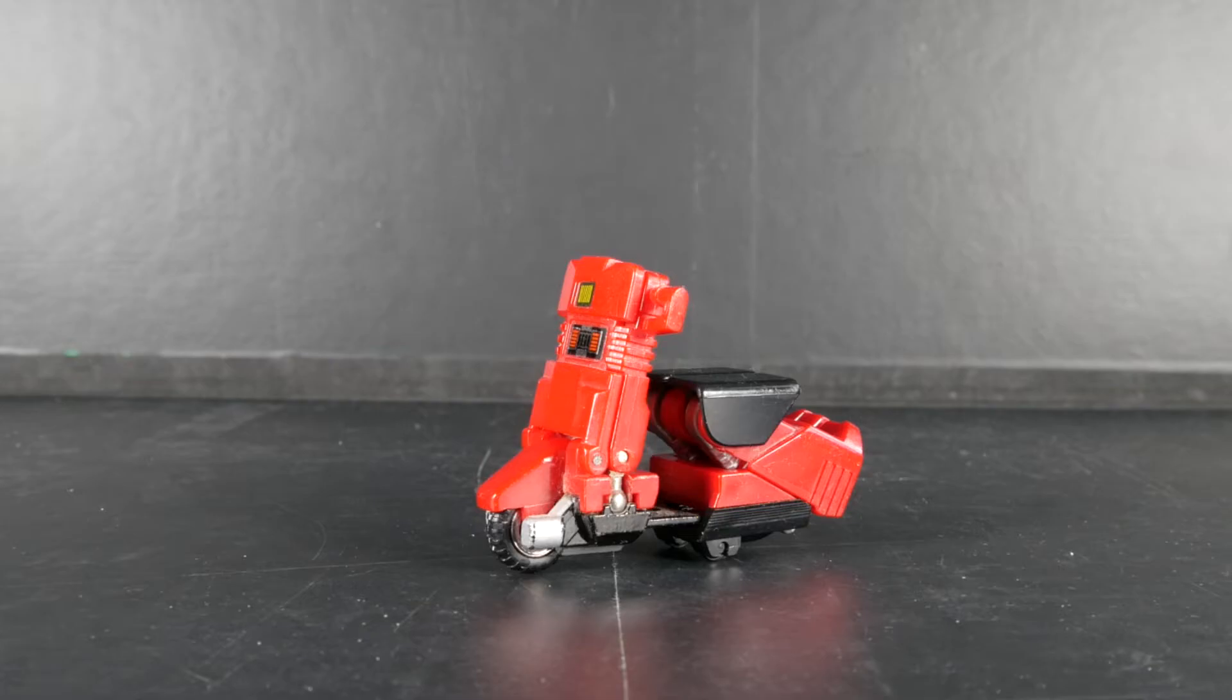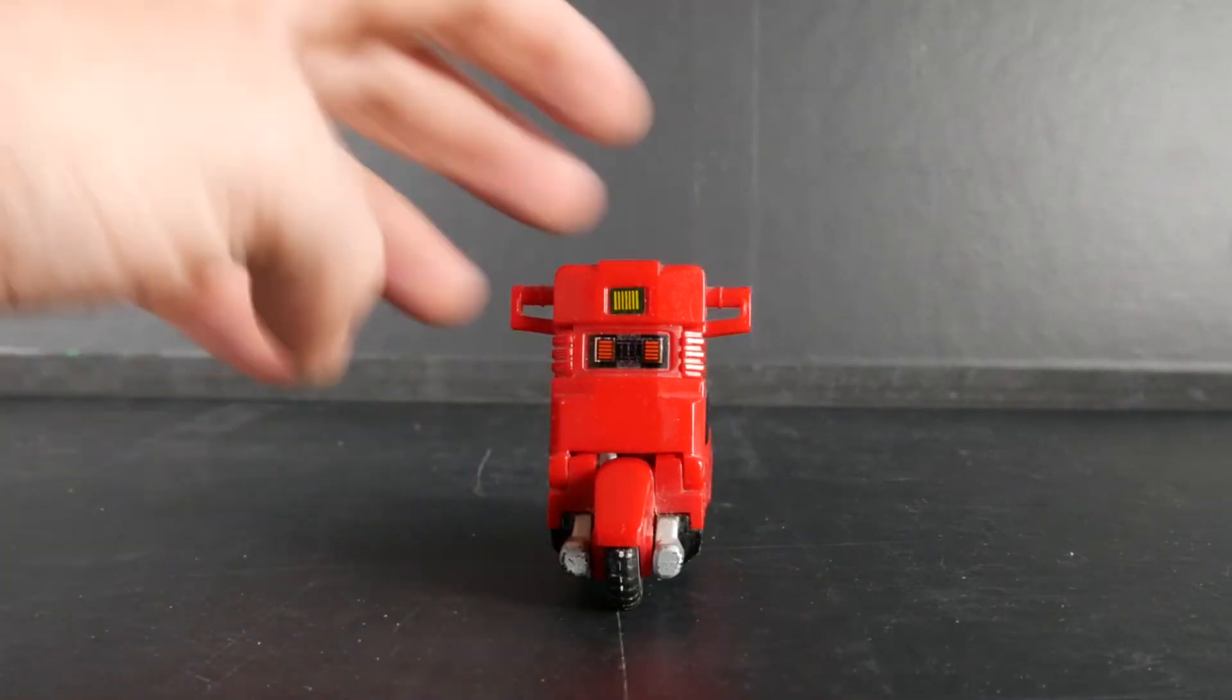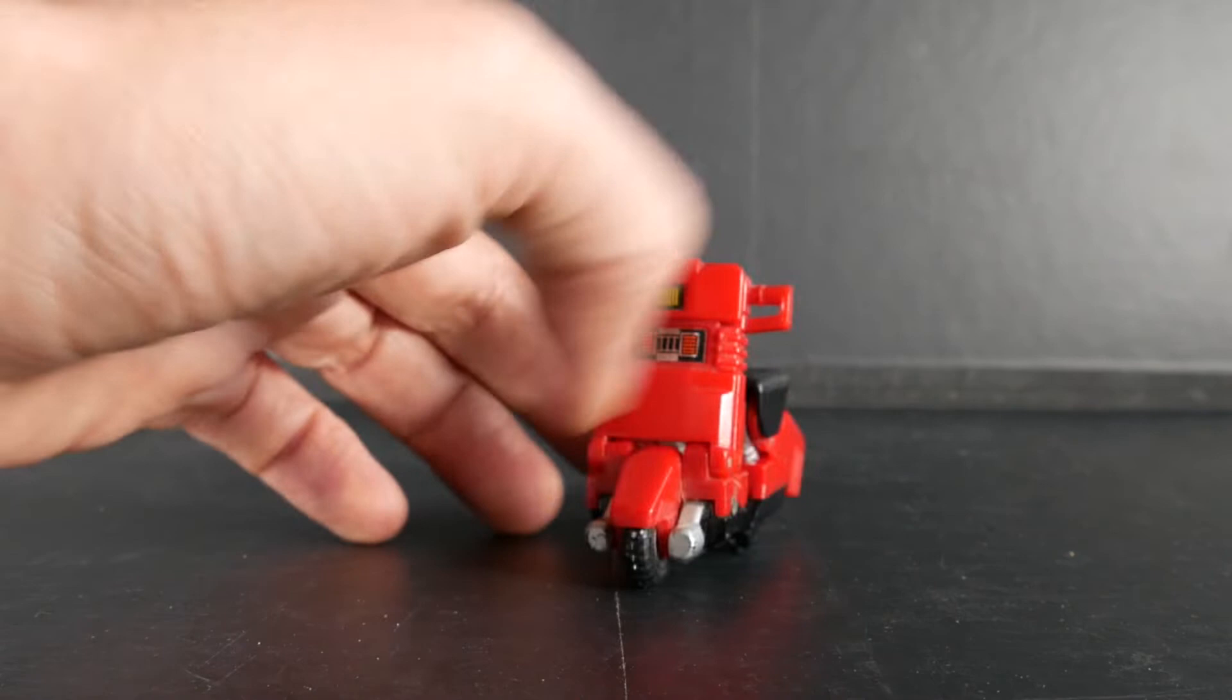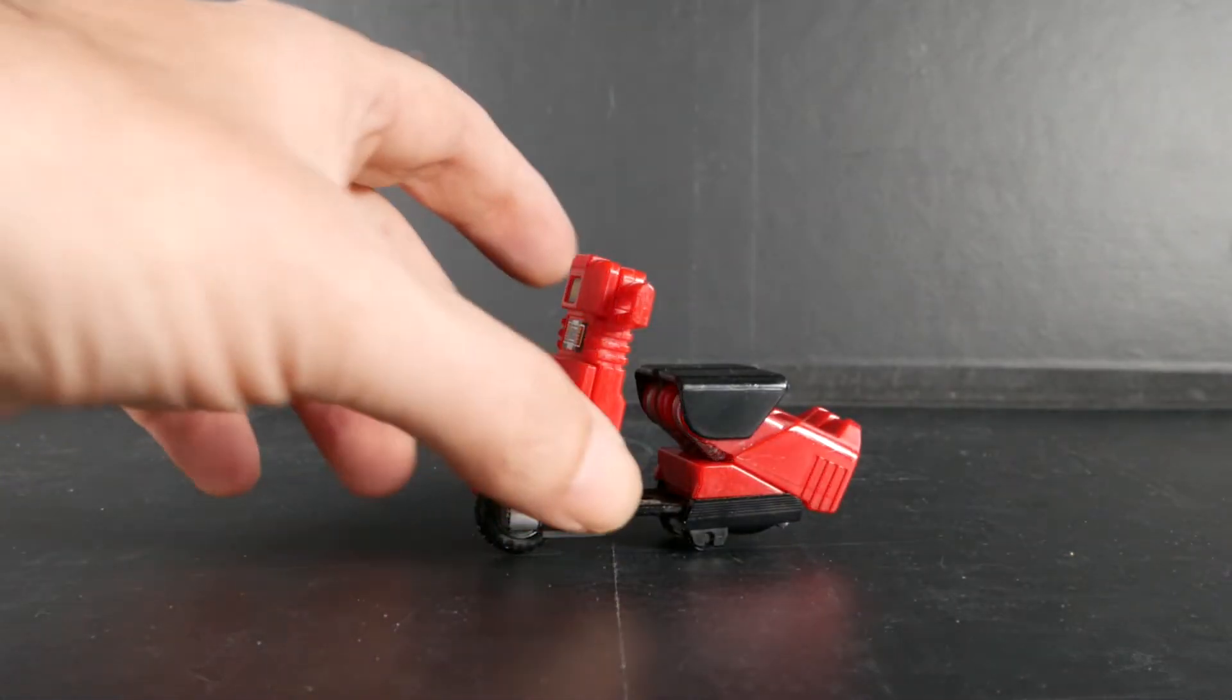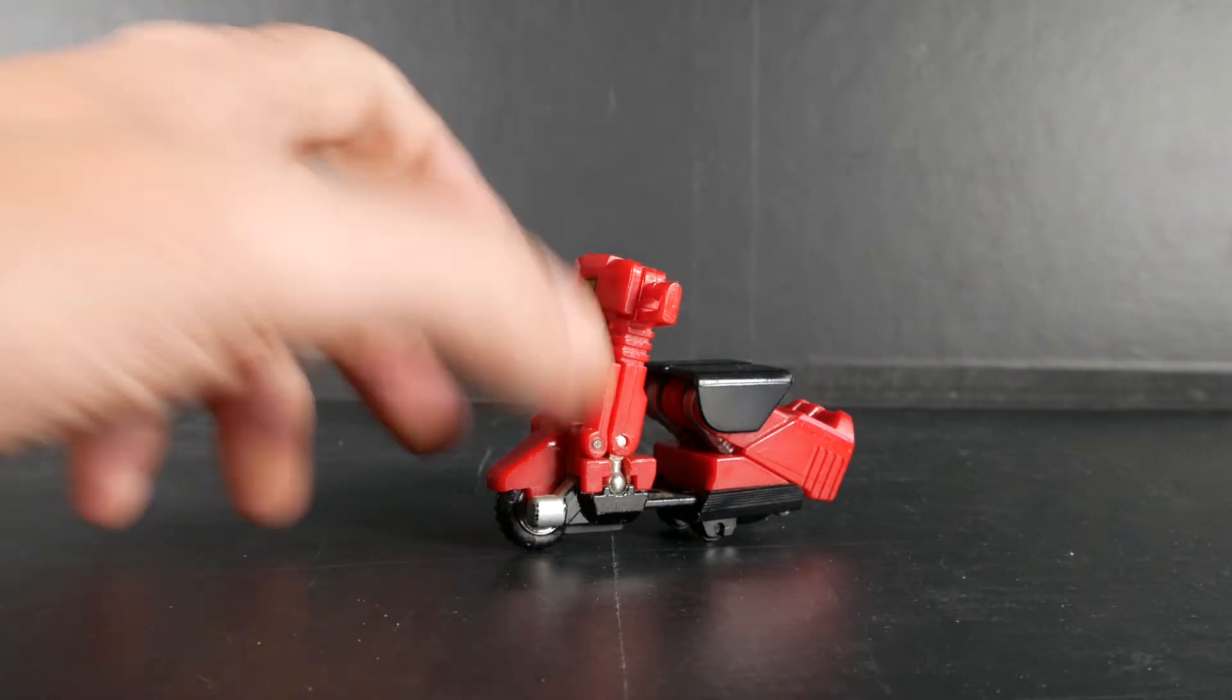Alors le jouet commercialisé par Tonka et Bandai à partir de 1983, et ça jusqu'à la fin de la licence des gobos. Alors ce qui est marrant c'est par rapport à la taille du jouet. Scooter c'est l'un des plus petits robots de la série.